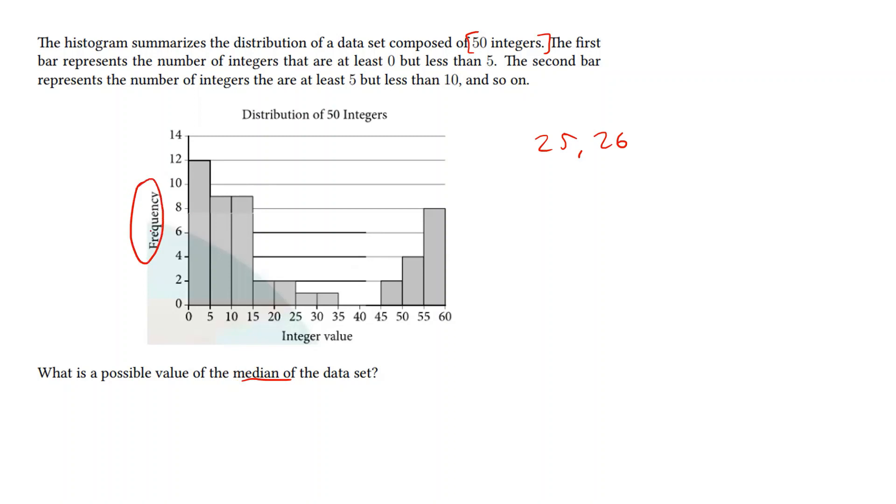We're going to follow the frequency chart for this. The first 12 are going to fall in this range as denoted by this bar graph. The next 9 will fall in this category and the next 9 will fall in this category. Now notice that 12 plus 9 plus 9 is actually greater than 25, where 12 plus 9 is 21. That means that the 25th and 26th data points are both coming from this interval.